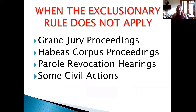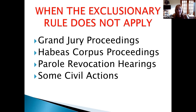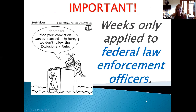There are a couple situations when the exclusionary rule does not apply. Although you cannot use illegally obtained evidence against the defendant at the criminal trial, it may be used in some other proceedings: grand jury proceedings to determine if the case will continue to trial; habeas corpus petitions where someone already in jail wants to argue for release; parole revocation hearings; and some civil actions. But you cannot use it in the criminal trial.